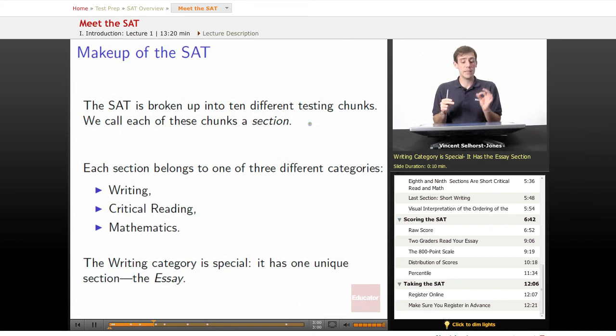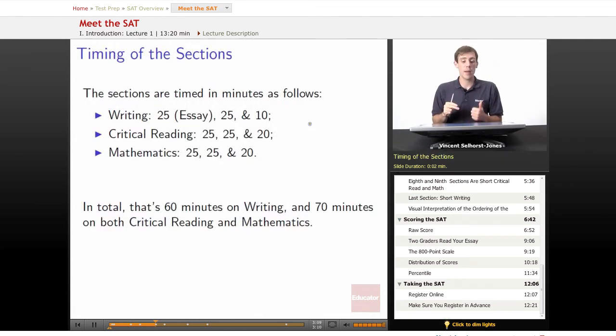The writing category is special. The writing section has one special, unique section inside of it, the essay, and we'll talk more about the essay later. The sections are timed in minutes as follows: Writing has 25 minutes for the essay, and then a 25 minute and a 10 minute. Critical reading has a 25 minute, a 25 minute, and a 20 minute, and then mathematics is the same as critical reading. So in total, that's going to be 60 minutes on writing, and then 70 minutes on both critical reading and mathematics.